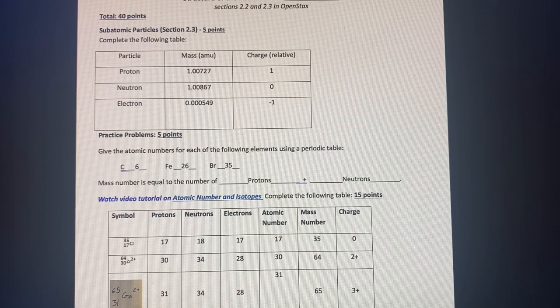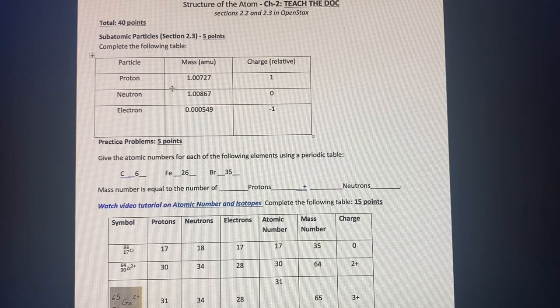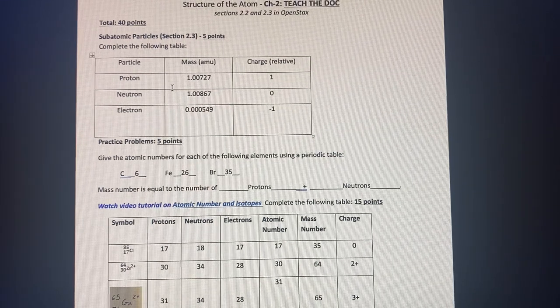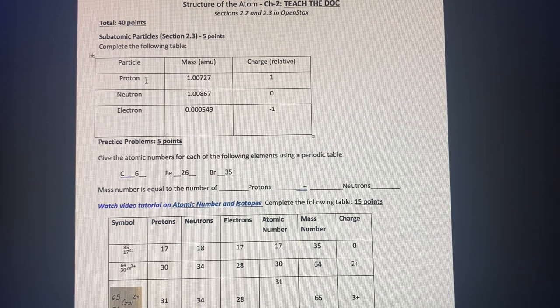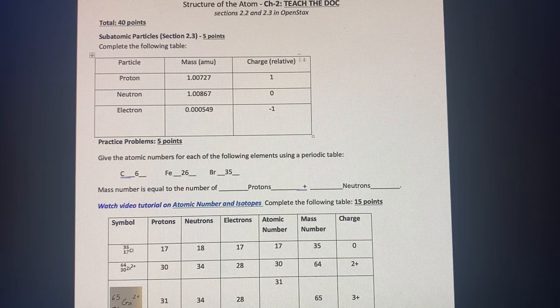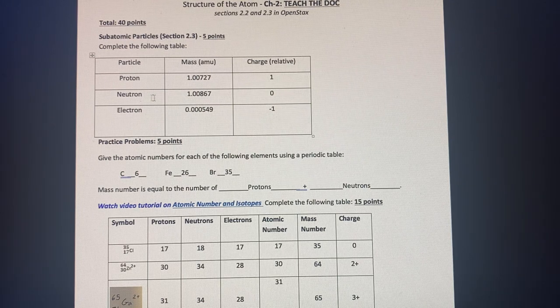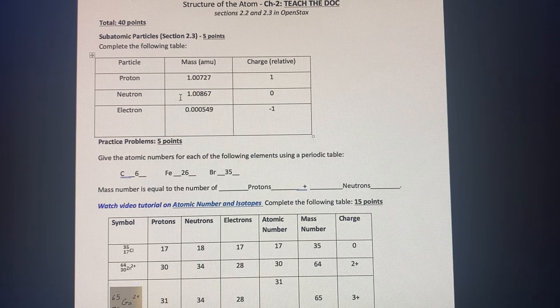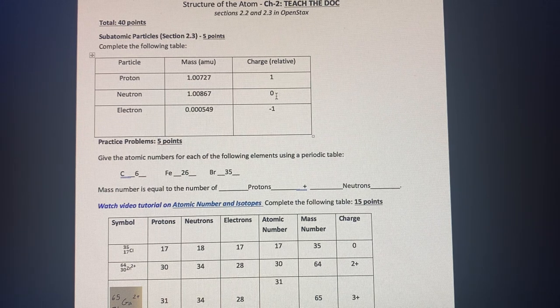For this assignment, we first went over the subatomic particles and learning about the different masses and charges. The first one is proton with the mass given to us. The charge of a proton is positive one. A neutron is the second particle that we know by the given mass and charge as zero.